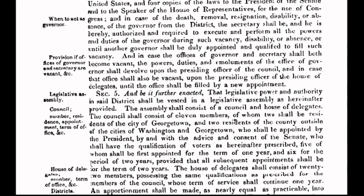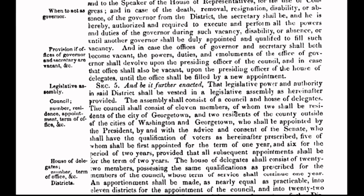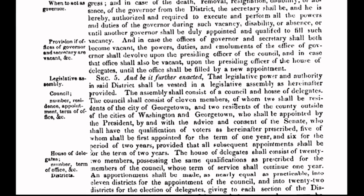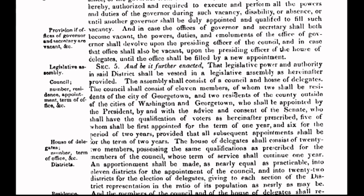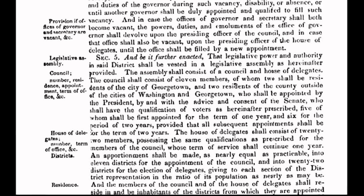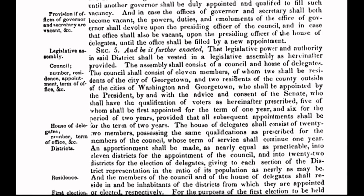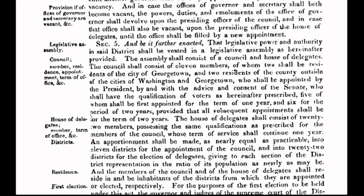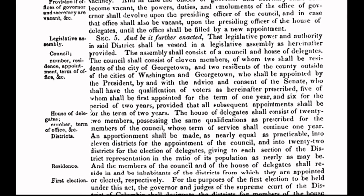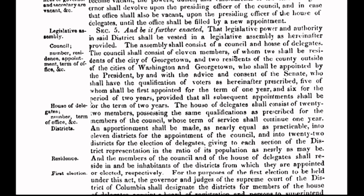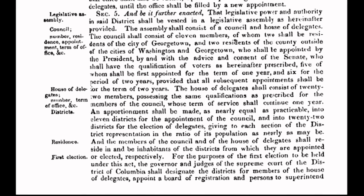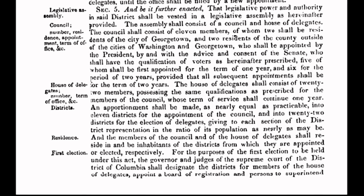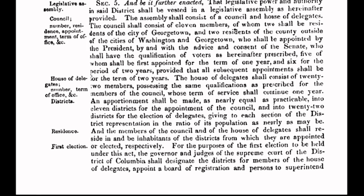It doesn't take a constitutional historian to figure out that the United States government has not been subject to the consent of the governed since long before you and I were born. Rather, the governed are subject to the whim and greed of the corporation, which has stretched its tentacles beyond the 10-mile-square parcel of land known as the District of Columbia. In fact, it has invaded every state of the republic. The corporation has no jurisdiction beyond the District of Columbia — you just think it does. We the people are presumed to know the law, which is very strange since we are taught nothing about the law in school.